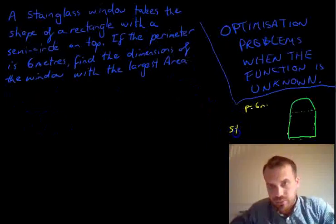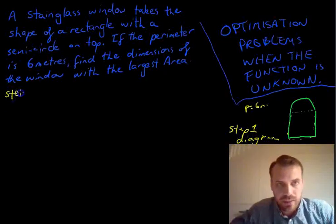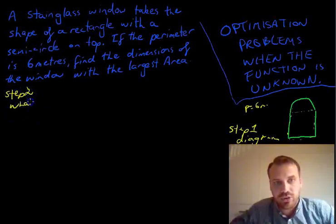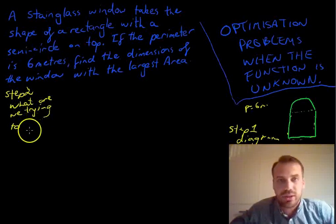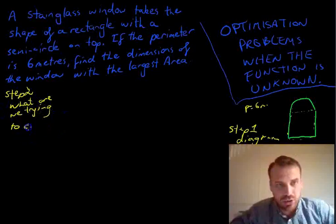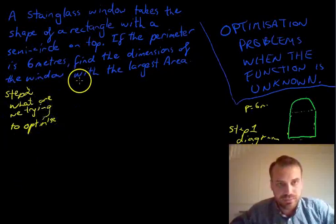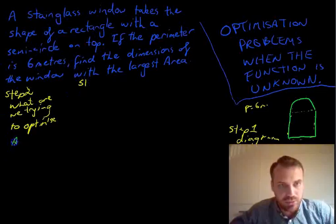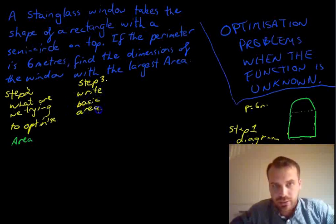So step one, draw a diagram. We've got a diagram. Step two, what are we trying to optimize? In all of these questions, it's going to say something like largest something or smallest something. We're trying to optimize something. In this case, we're trying to optimize the area. So step three, I guess, let's write what we're trying to optimize: Area. Step three, write basic area formula for this shape.